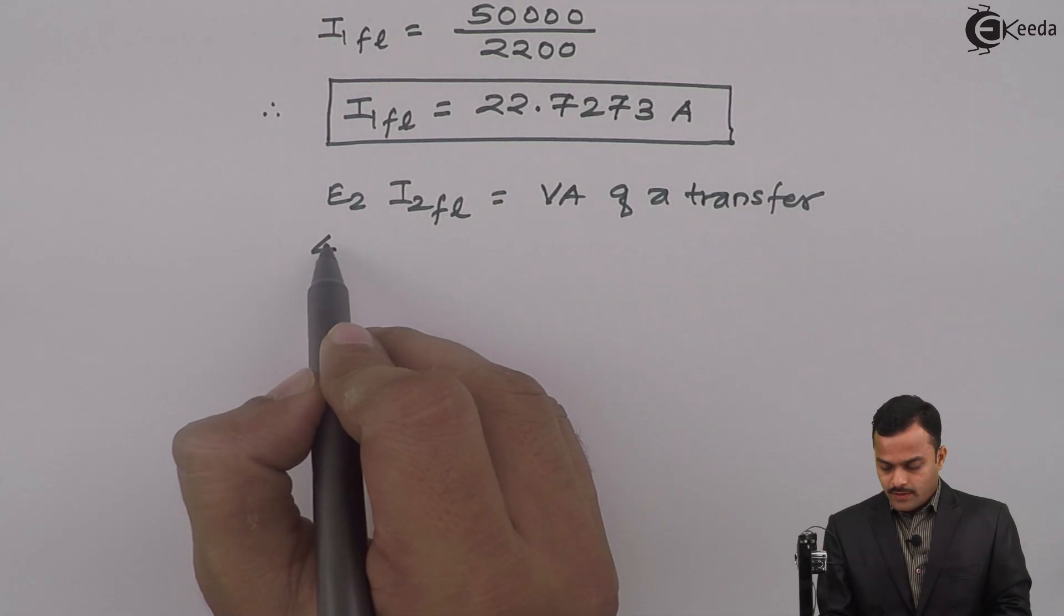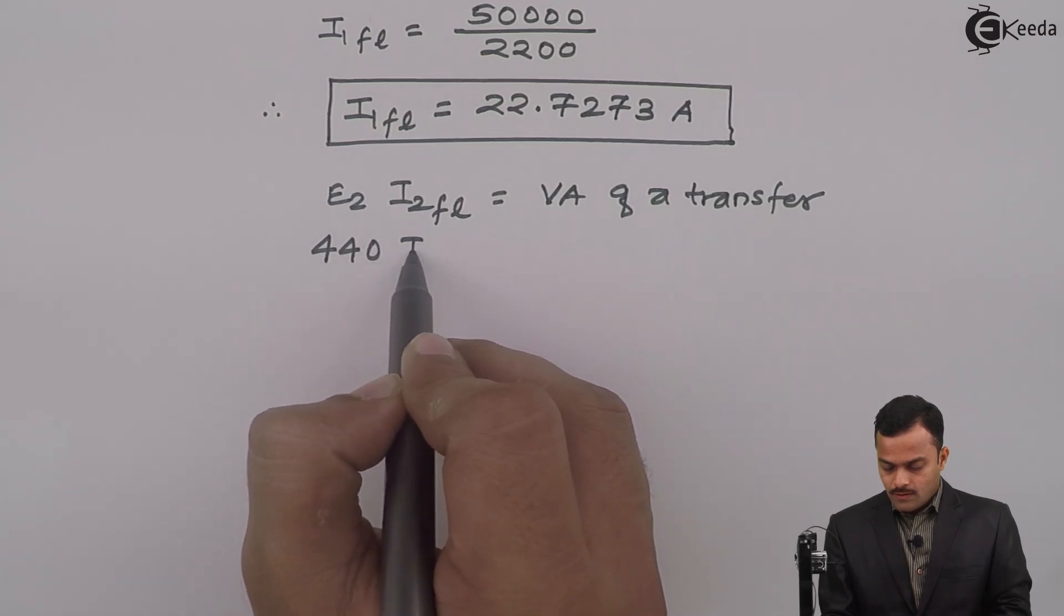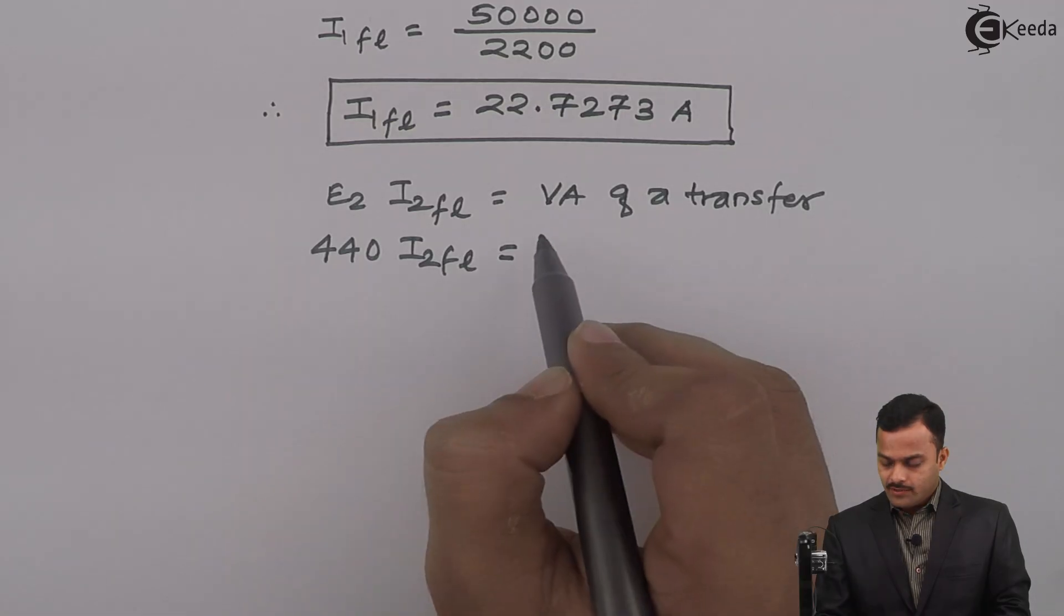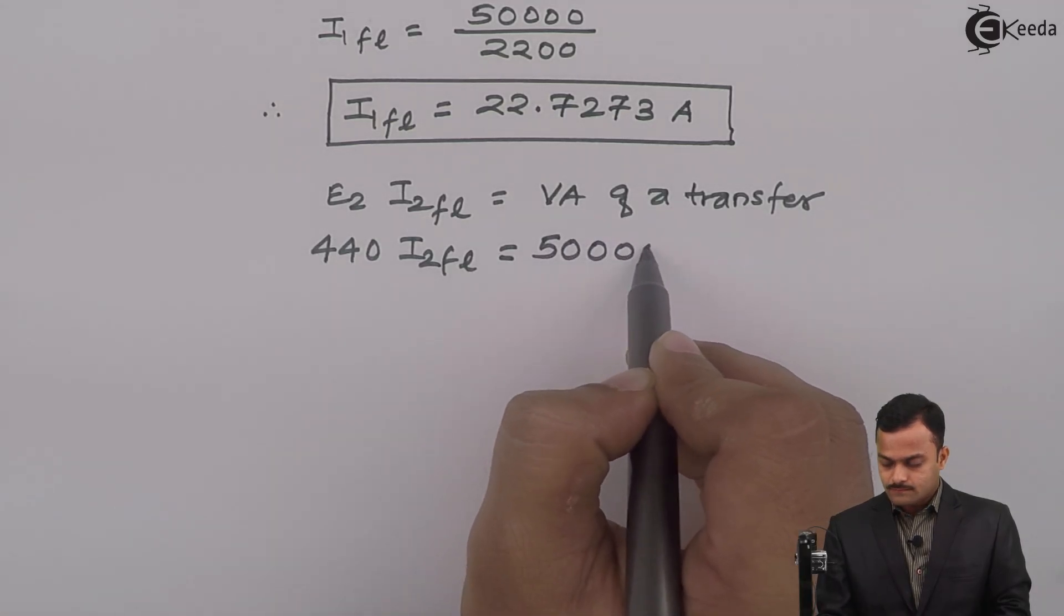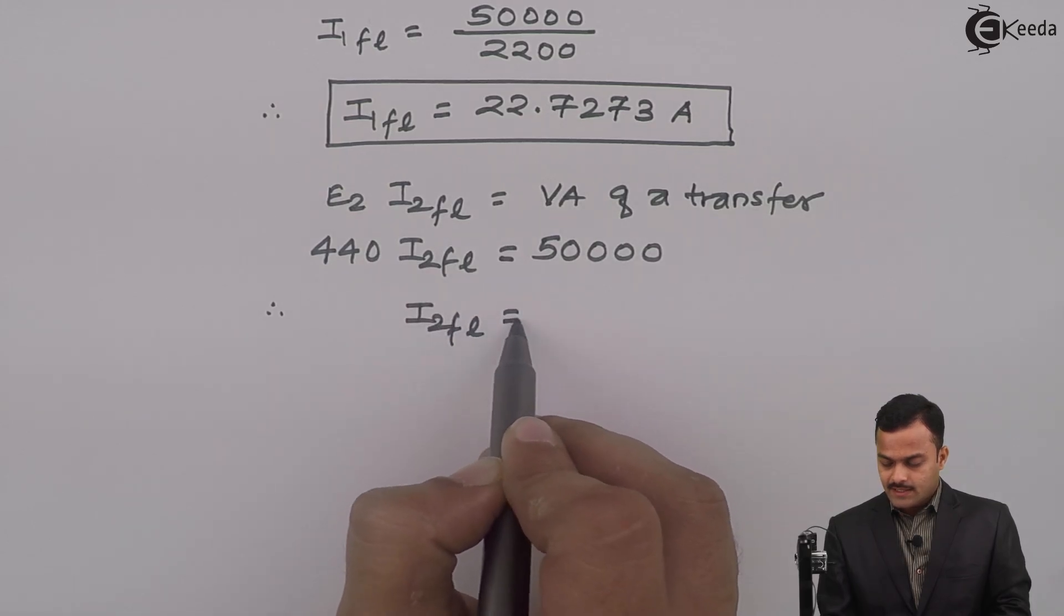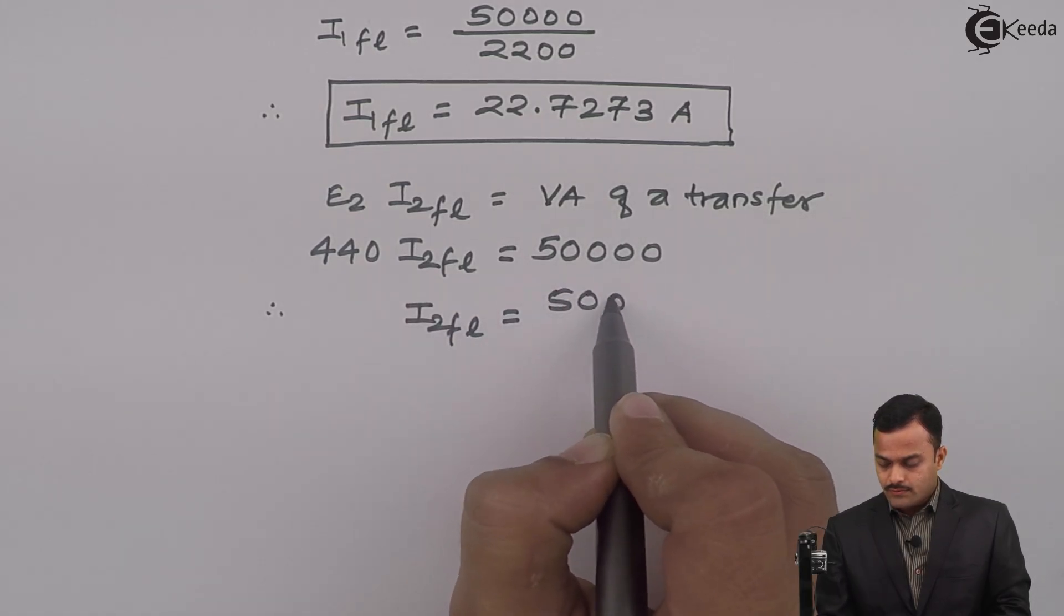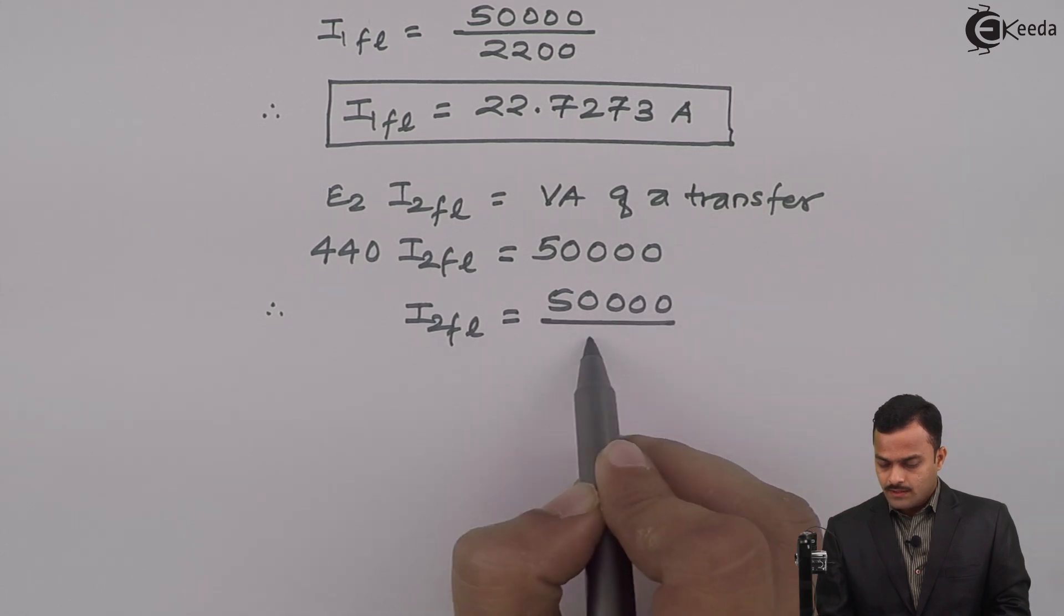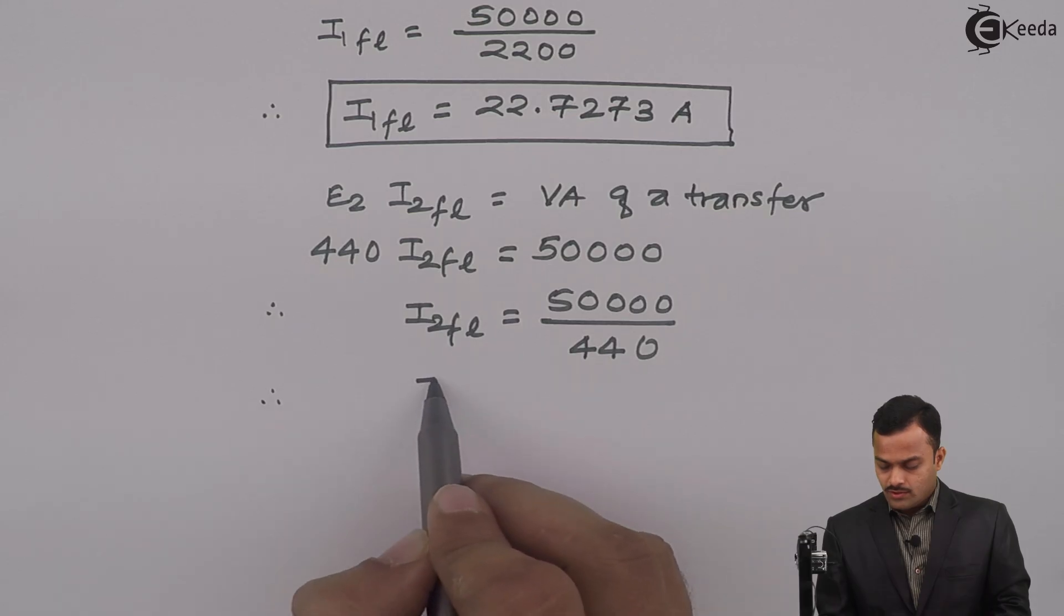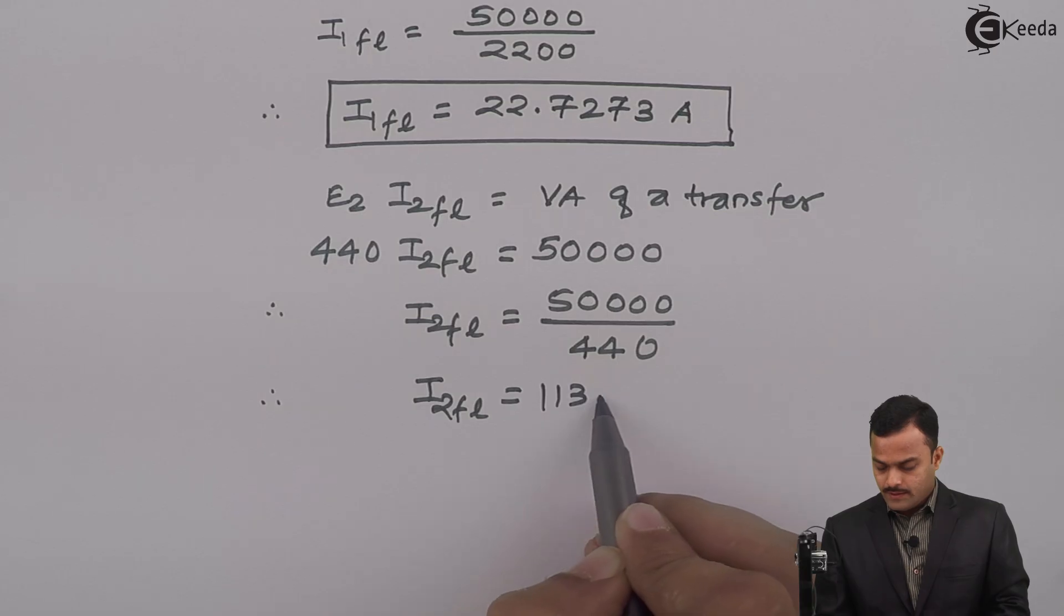E₂ is 440. I₂FL we are supposed to calculate, and VA rating of a transformer is 50,000. From this I can get rated secondary current equal to 50,000 / 440. Solution of this equation will give you I₂FL = 113.6364 ampere.